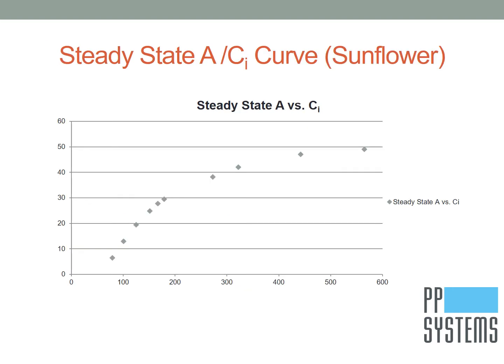Here you are looking at a steady-state A/Ci curve on sunflower using the Cyrus III portable photosynthesis system at a controlled leaf temperature of 25 degrees C and a photosynthetic photon flux density of 1500 micromoles per meter squared per second. In this case, 10 individual measurements were recorded at two-minute intervals for a total measurement time of approximately 20 minutes.